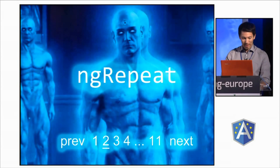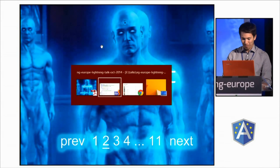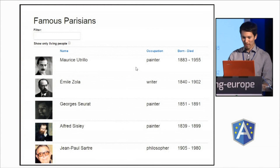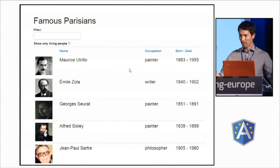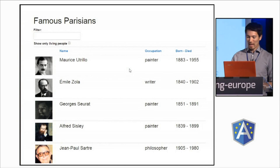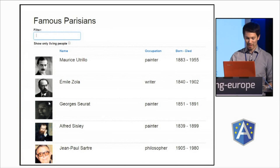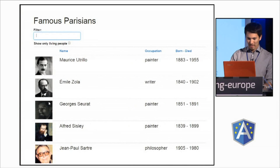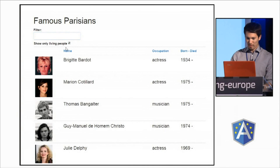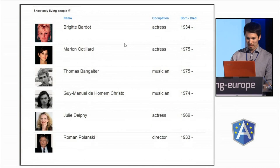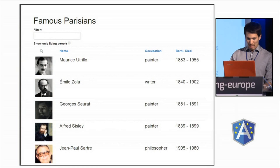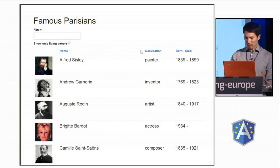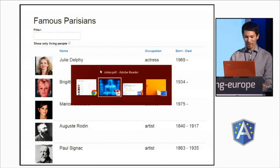Let's take a quick look at how this could be done. In honor of this wonderful city that's hosting us this week, I have a little demo app — a famous Parisians list. As you can imagine, it can be filtered in a couple of different ways. Let's see who's still alive — Brigitte Bardot, good. It can be sorted too. Pretty straightforward.